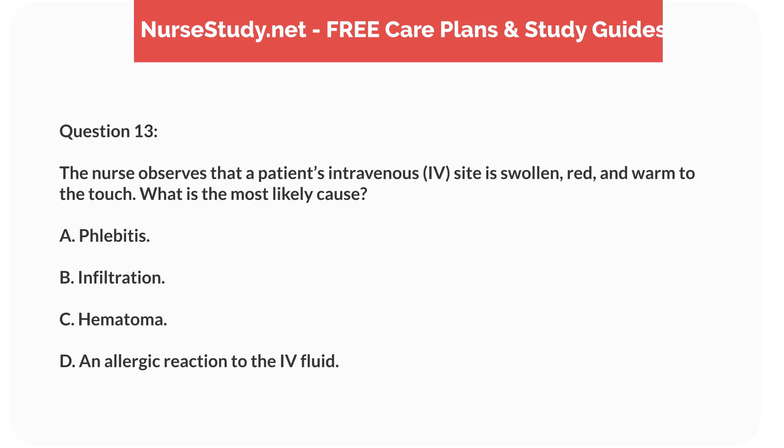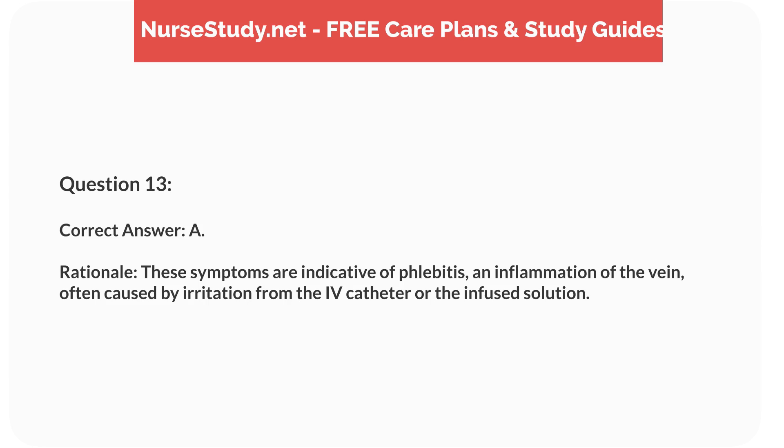Question 13. The nurse observes that a patient's intravenous (IV) site is swollen, red, and warm to the touch. What is the most likely cause? A. Phlebitis. B. Infiltration. C. Hematoma. D. An allergic reaction to the IV fluid. Correct answer: A. Rationale: these symptoms are indicative of phlebitis, an inflammation of the vein, often caused by irritation from the IV catheter or the infused solution.